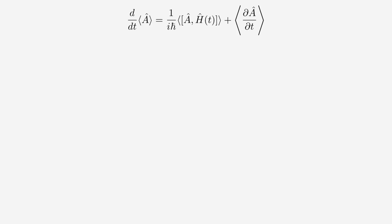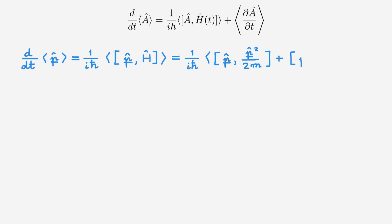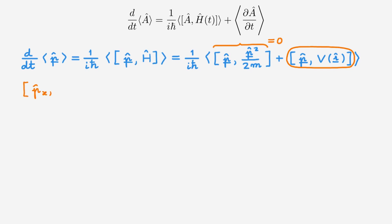Let's now turn to momentum. The derivation is very similar to the one for position. Using the formula for the time dependence of the expectation value, we get 1 over iℏ times the expectation value of the commutator — again, just a shorthand for three separate equations, one for each component of the momentum operator. We expand the Hamiltonian to get the expectation value of two commutator terms. The momentum operator commutes with any power of itself, so the commutator with the kinetic energy vanishes, and the only commutator we have to evaluate is the one with the potential. To do so, we use the result from the video on functions of operators: the commutator between the momentum operator and any function f of the position operator is equal to −iℏ times the derivative of f.